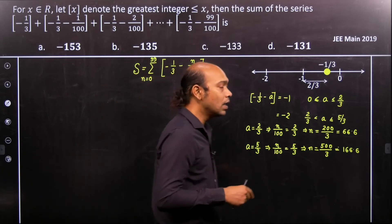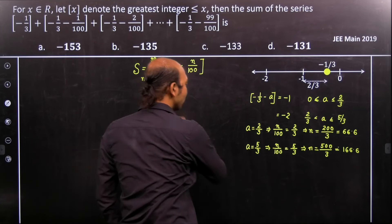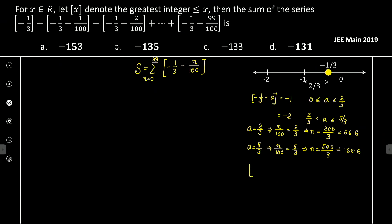Therefore we can easily understand the final value. That implies minus 1 by 3 minus n by 100 will equal minus 1 if n lies between 0 less than or equal to n less than or equal to 66.